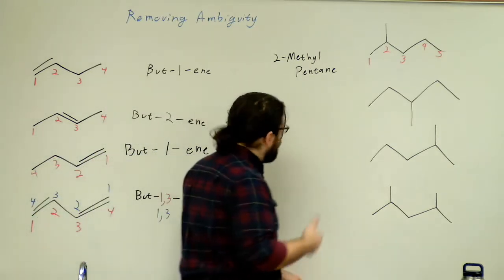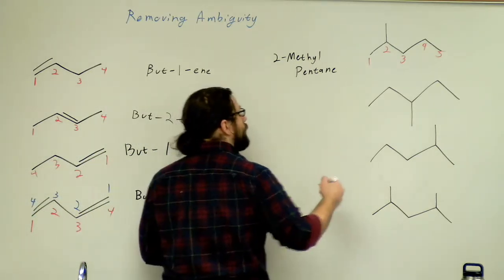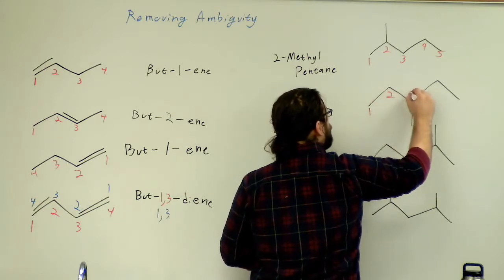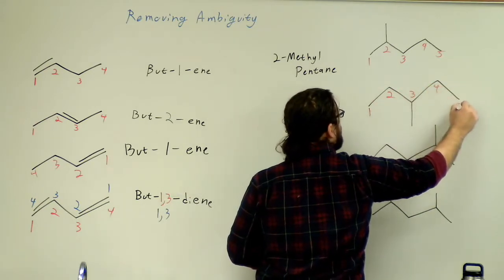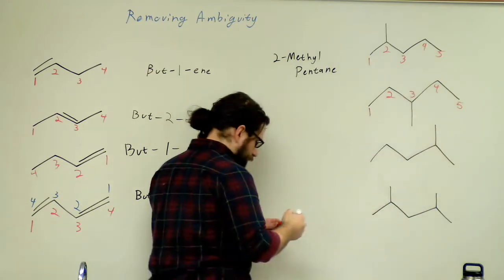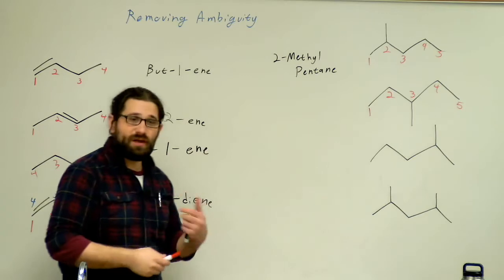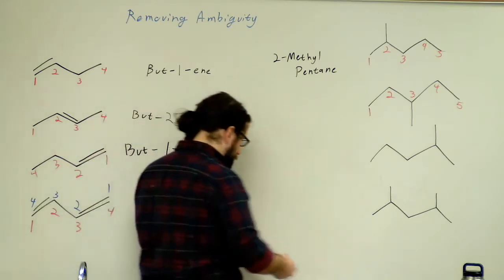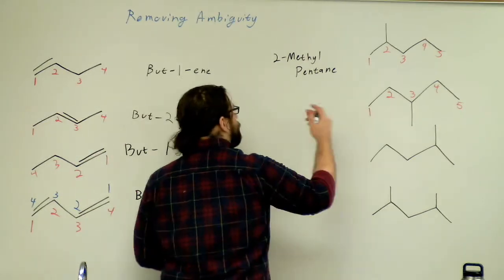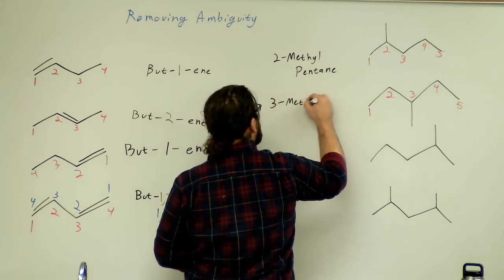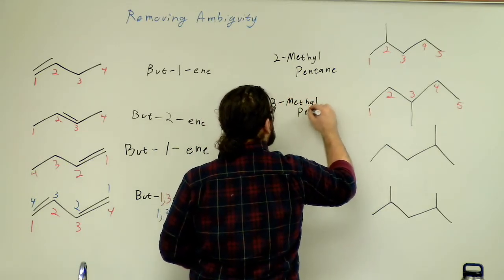The next one, very similar. It's also a pentane, but my methyl group is on the middle carbon. So I'm going to go one, two, three, four, five. So this will be carbon number three. Notice because it's in the middle, it actually doesn't matter if we number from right to left or left to right because it would be the third carbon either way. So this is going to be 3-methylpentane.